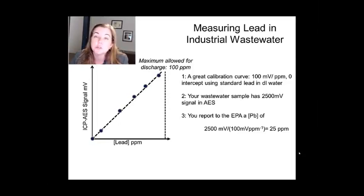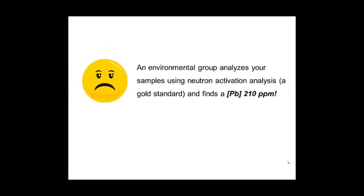You give this data to your boss and say we only got 25 ppm of lead. The problem is an environmental group gets some of the water out of your pipe. They analyze it themselves using a methodology called neutron activation analysis, which is a very specialized technique that involves the use of a nuclear reactor, and they find a lead concentration of 210 ppm. And it's such an unassailable technique that your company is getting sued.